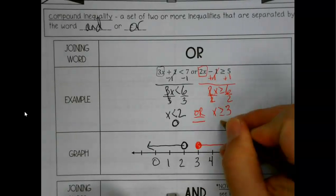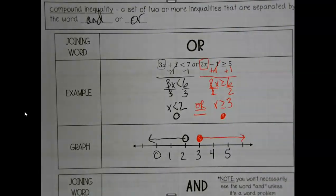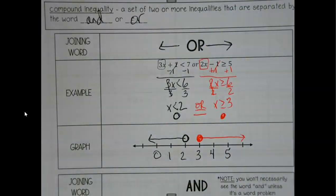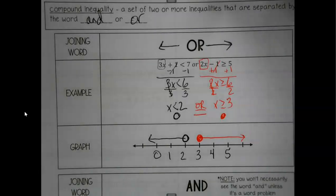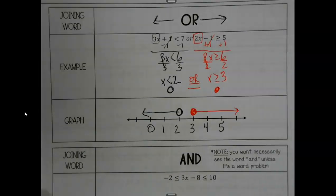With 'or equal to' we're going to have a filled-in dot. This is what your 'or' graph should look like about 95 times out of 100 — there's an occasional special case. Ors typically have arrows going out — that's the name of the game. For now we're just going to be content with solving and graphing; interval notation can get kind of crazy for these.